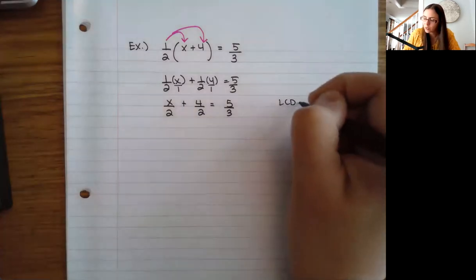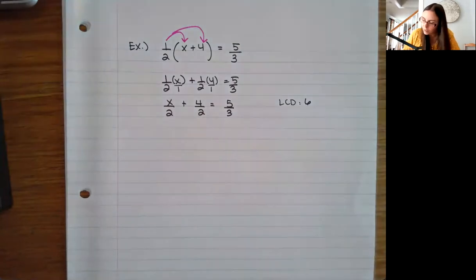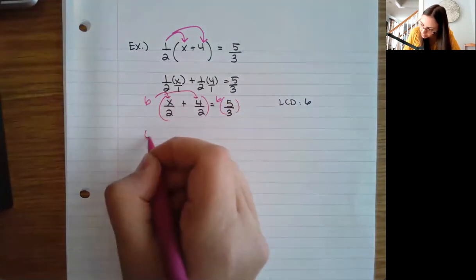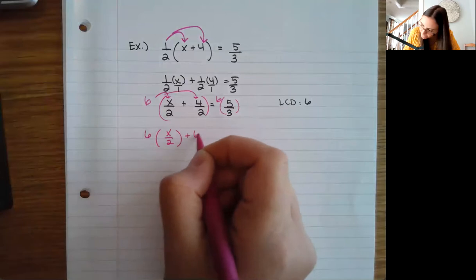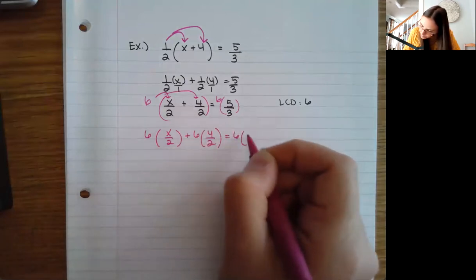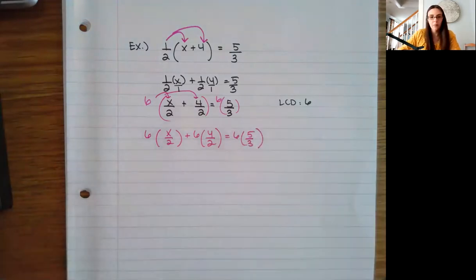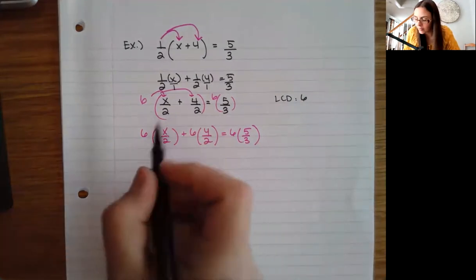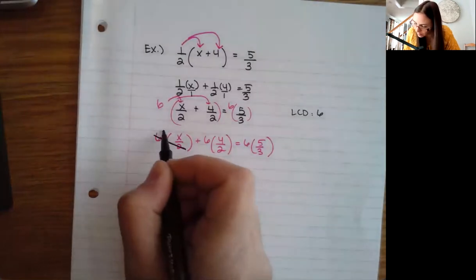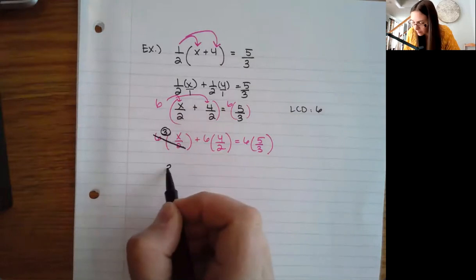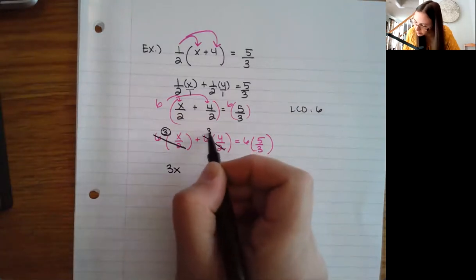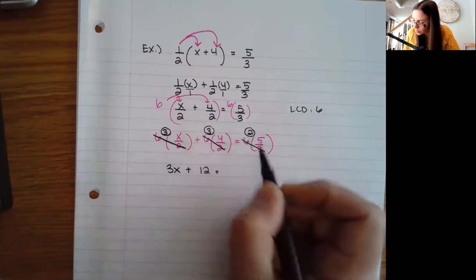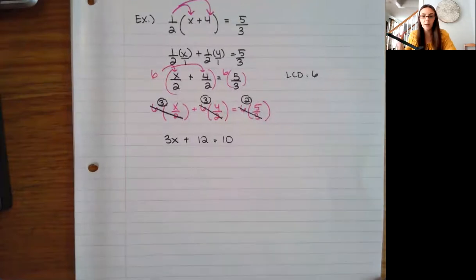My denominators are two and three, so my LCD is six. I multiply both sides by six, distributing throughout. I simplify: six divided by two is three, so three times x gives 3x. Six divided by two is three, and three times four is 12. Six divided by three is two, and two times five is 10. Now I just have a regular problem.